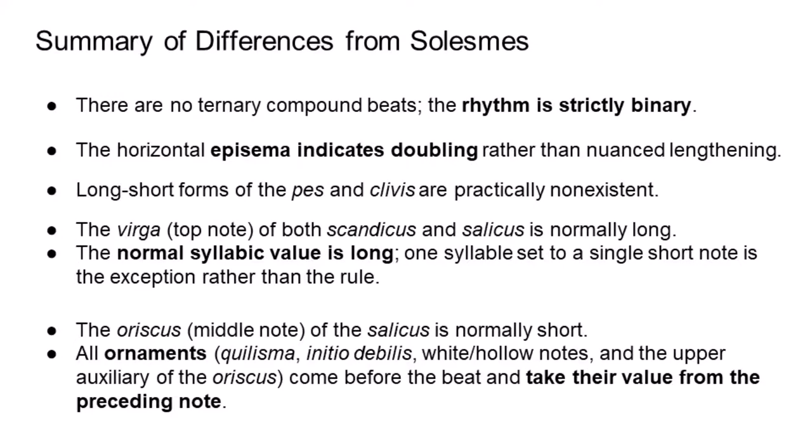Summary of principal differences from the Solem method: There are no ternary compound beats; the rhythm is strictly binary. The horizontal episema indicates doubling rather than nuanced lengthening. Long-short forms of the passing clevis are practically non-existent. The virga of both scandicus and salicus is normally long. The normal syllabic value is long; one syllable set to a single short note is the exception rather than the rule. The ariscus of the salicus is normally short. All ornaments come before the beat and take their value from the preceding note.